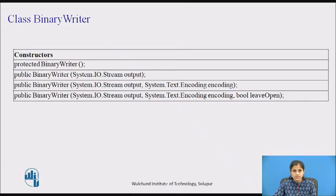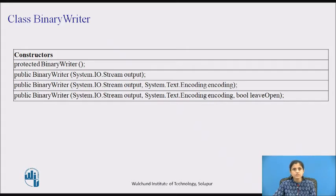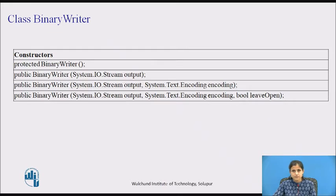There are four constructors of BinaryWriter class. The first takes no parameters and initializes a new instance that writes to a stream. The second takes one parameter — the output stream — and uses UTF-8 encoding. The third takes two parameters: output stream and character encoding. The fourth takes three parameters: output stream, character encoding, and a boolean 'leaveOpen' — true to leave the stream open after the BinaryWriter object is disposed, otherwise false.